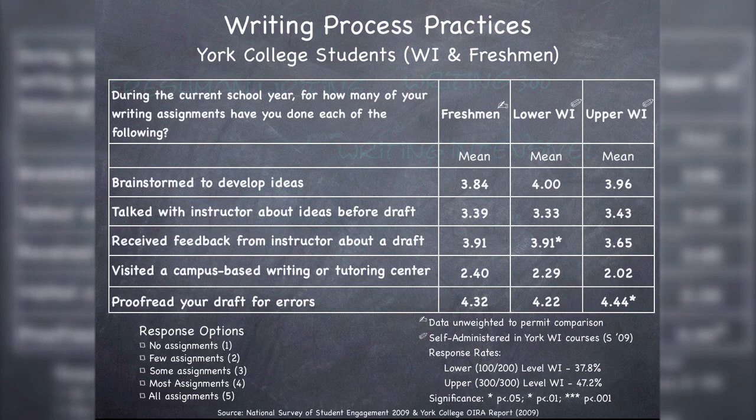The fact that we mostly don't see mean score differences between the freshman and the WI responses tells me that students are carrying forward the writing process practices they started in their freshman year — carrying that into both the lower WIs and the upper WIs. And of course this doesn't happen without the faculty in those writing-intensive courses supporting that kind of work. I do want to note the two mean score differences that are statistically significant. If we look at 'received feedback from an instructor about a draft,' there's an asterisk for the lower WI telling us that in the upper-level WIs, students are saying they're not getting feedback from an instructor about a draft as often.